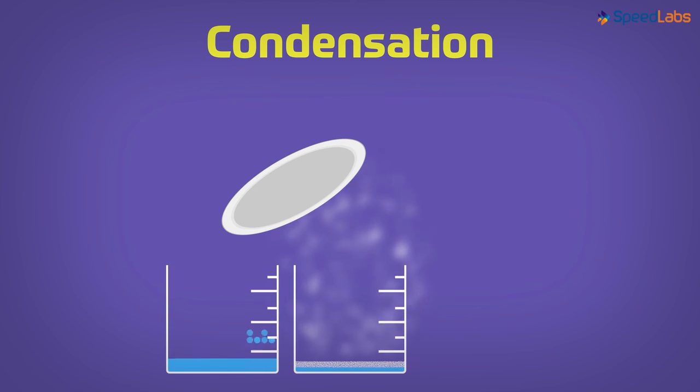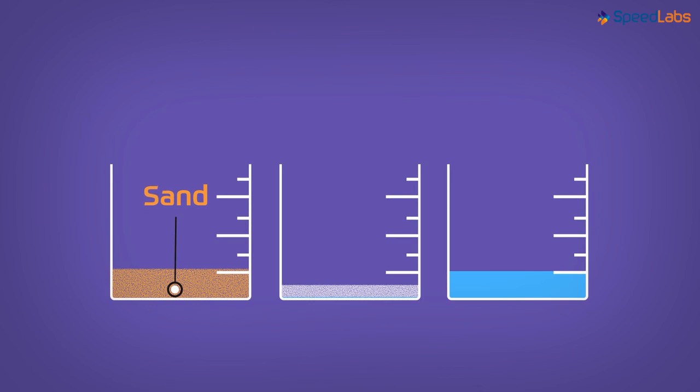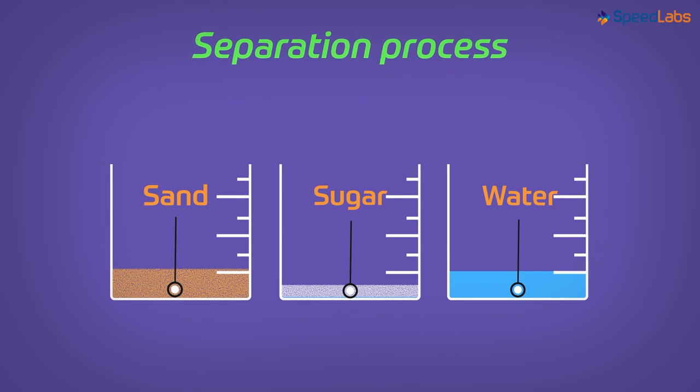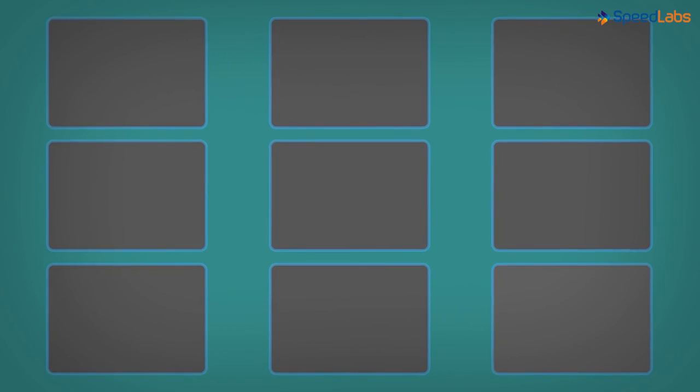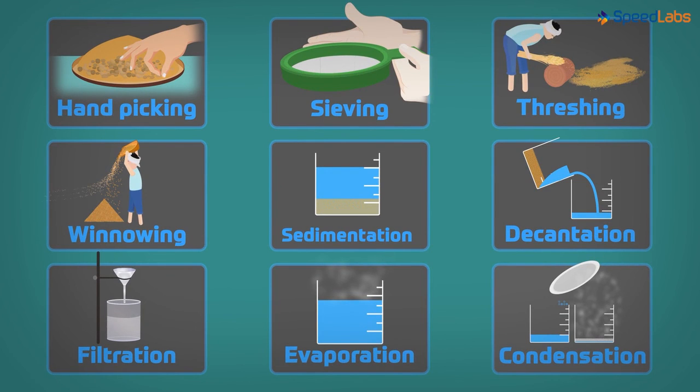The evaporation will make sure all the water is vaporized, leaving behind sugar in the container. So now we have sand in the first container, sugar in the second container and water in the third. This marks the successful completion of the separation process. This is how multiple methods can be employed for efficiently separating various components of a mixture.